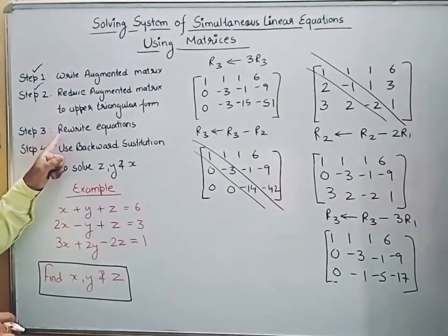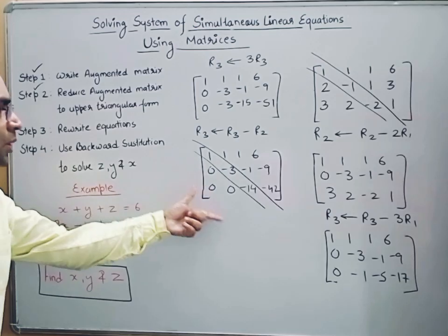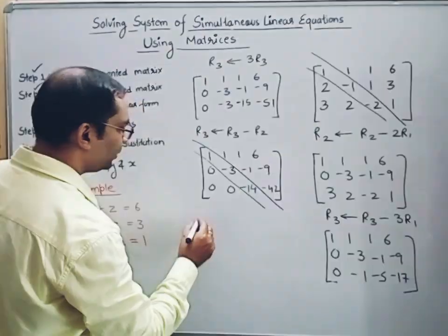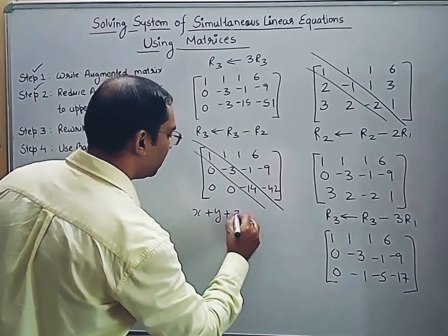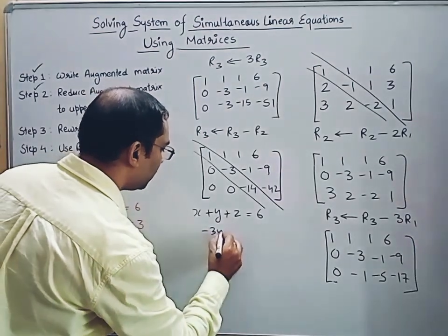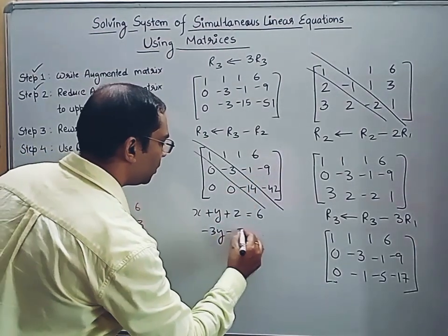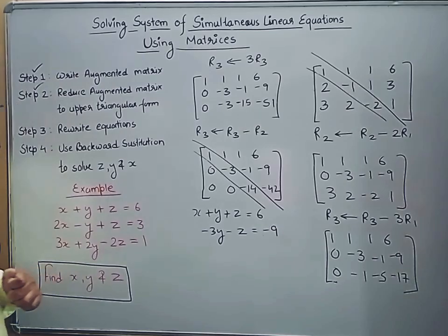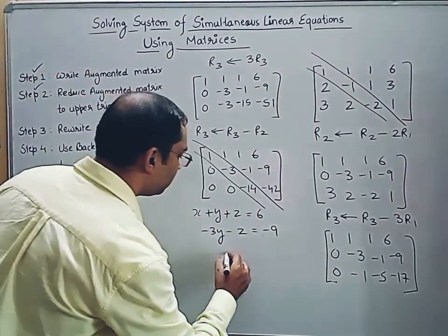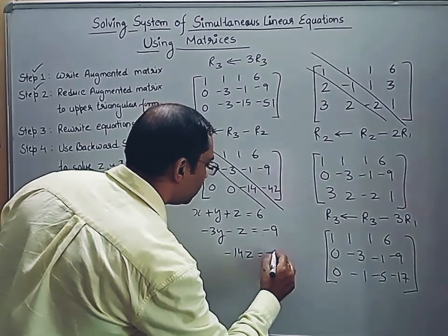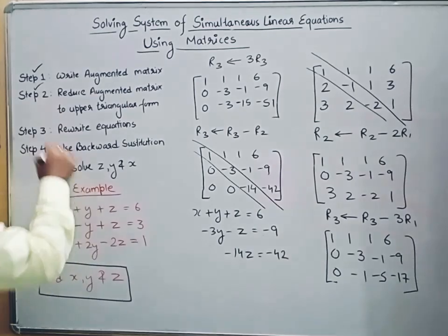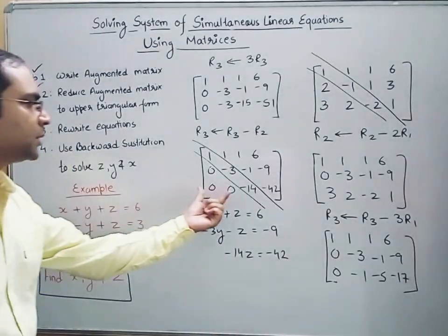Step 3: rewrite the equations using this upper triangular matrix. From the first row: x plus y plus z equals 6. From the second row: -3y minus z equals -9. From the third row: -14z equals -42.